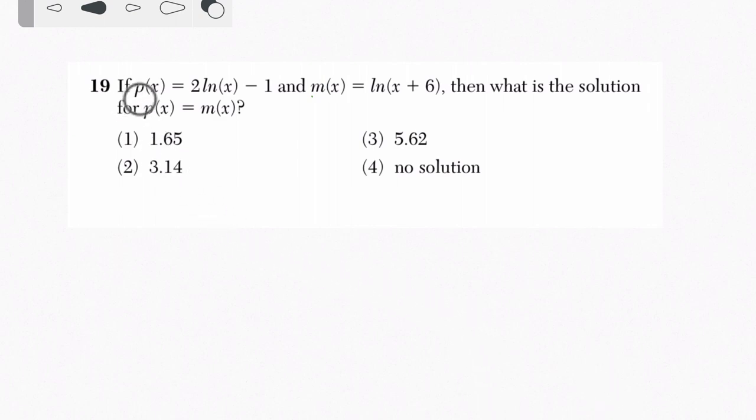Well, here you can see they're telling us the definition of a function p of x, and it equals twice the natural log of x minus 1. So I'm going to write that down over here. Twice the natural log of x minus 1. And then we've got m of x, and that equals the natural log of x plus 6.